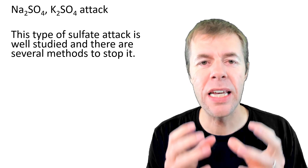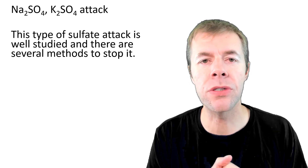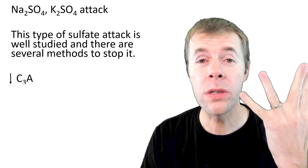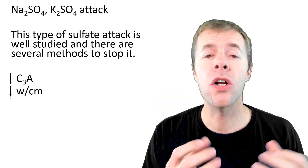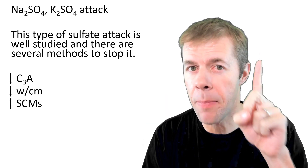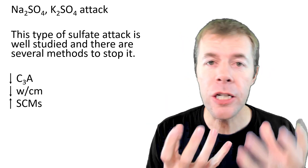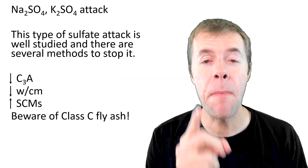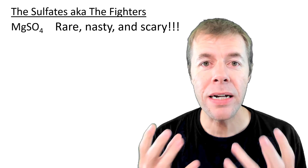Sodium and potassium sulfate attack is well understood, and there are many ways to stop it. First, you can reduce your C3A by using either a Type 2 or Type 5 cement. You can also reduce your water-to-cement ratio and increase the amount of SCMs, because by doing that you're effectively removing C3A — by taking out cement, you're removing C3A. Also, the SCMs will make your concrete microstructure tighter and harder for outside things to get in. But beware of Class C fly ash — it may make things worse.